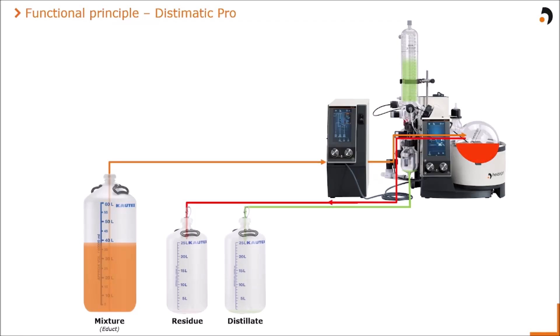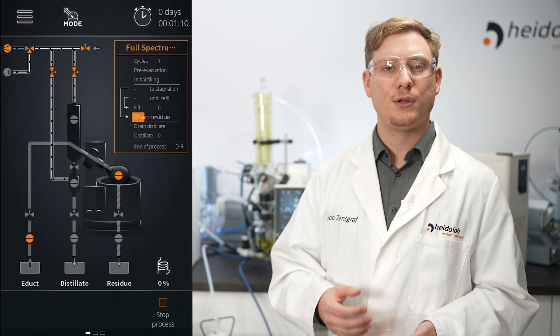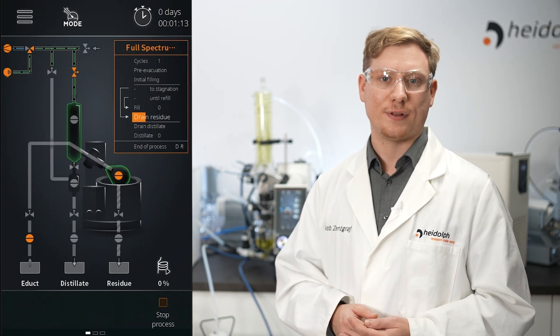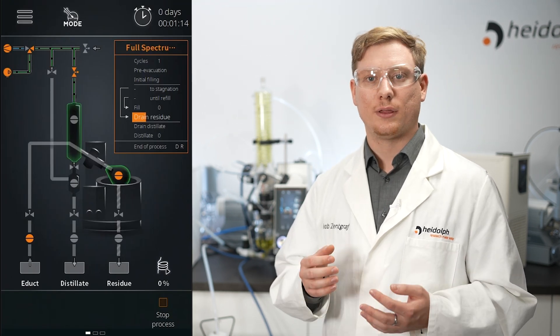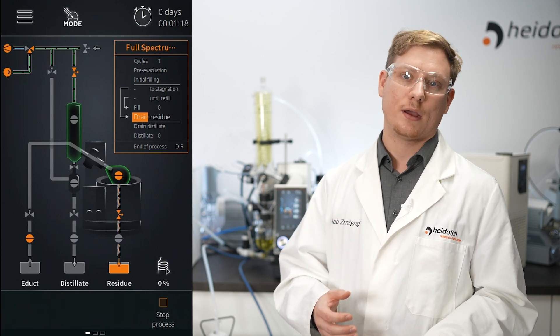For most applications the amount of solvent is significantly higher than the amount of residue, which is why this step will be repeated several times. During this period the concentration of our residue constantly increases inside the evaporation flask. After a while the sensor detects a constant filling level, indicating a mainly pure residue inside the evaporation flask.